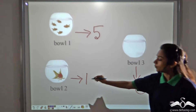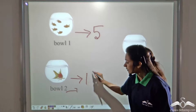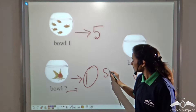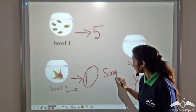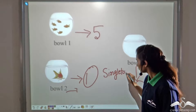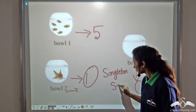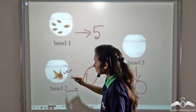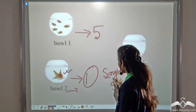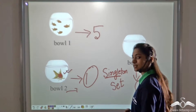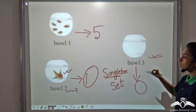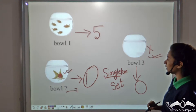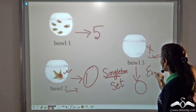In bowl two we can see that there is only one element, so this will be called a singleton set. Why singleton? Because this bowl has only a single element, or one element. Now what about bowl three? This bowl has no element, so this set will be called an empty set.